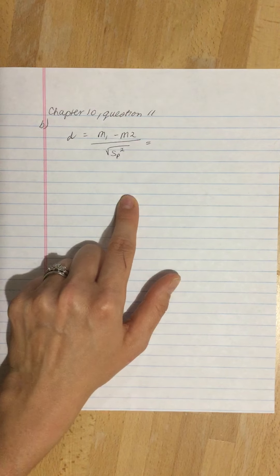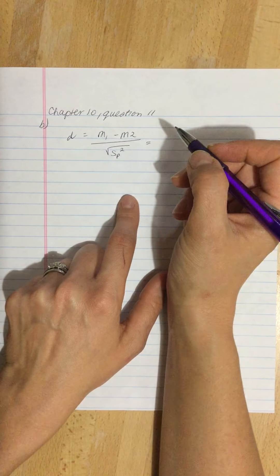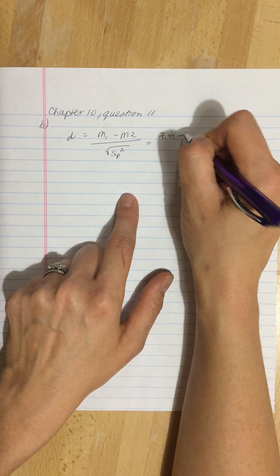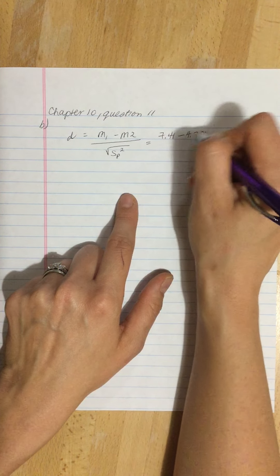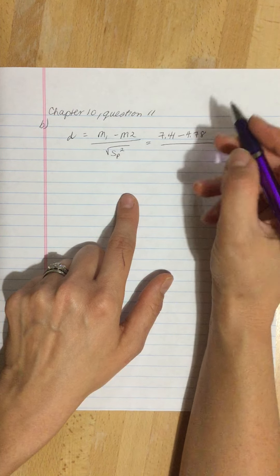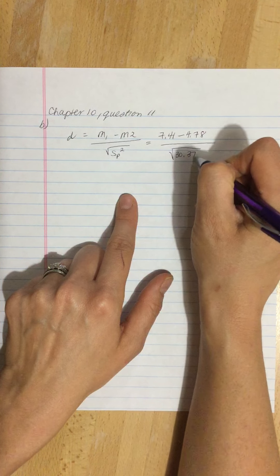So m1 was 7.41, m2 was 4.78, our pooled variance was 30.375, so the square root of 30.375.